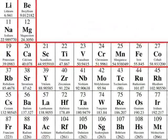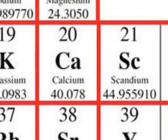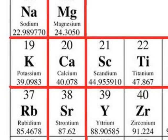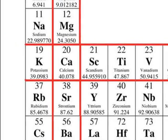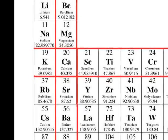Here is calcium on the periodic table of elements. Calcium is in group 2, which is the alkaline earth metals, and in period 4, as shown here.